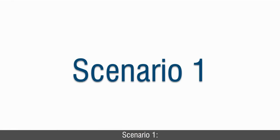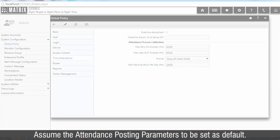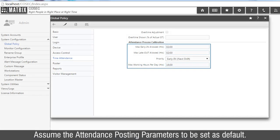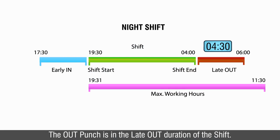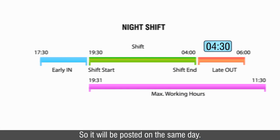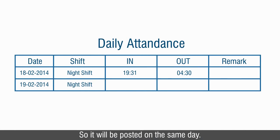Now let's consider different scenarios. Scenario 1: Assume the attendance posting parameters to be set as default. The out punch is in the late out duration of the shift, so it will be posted on the same day.